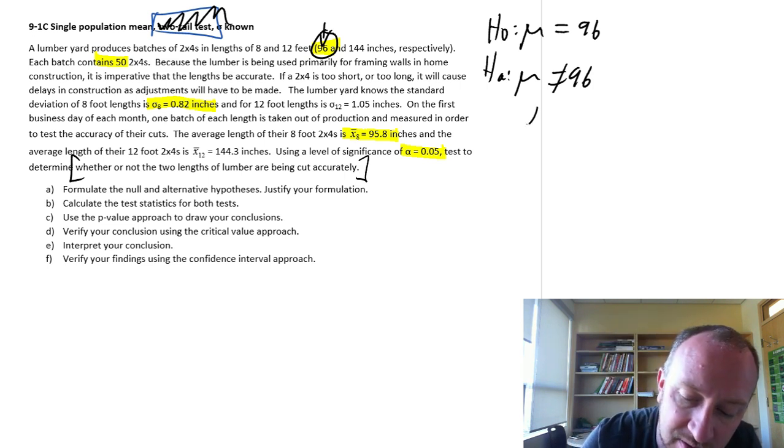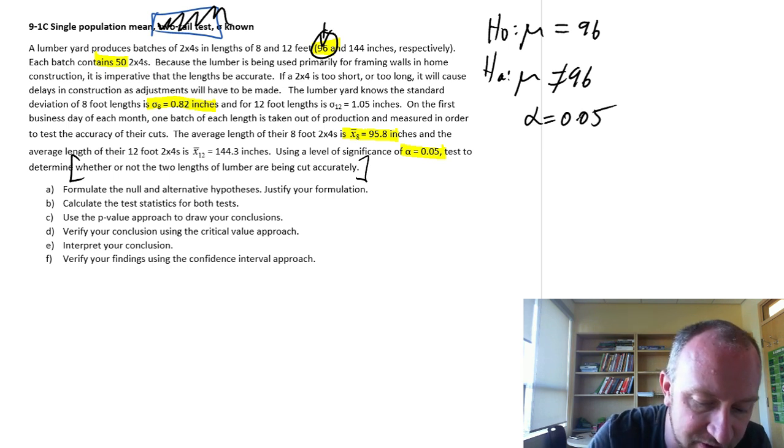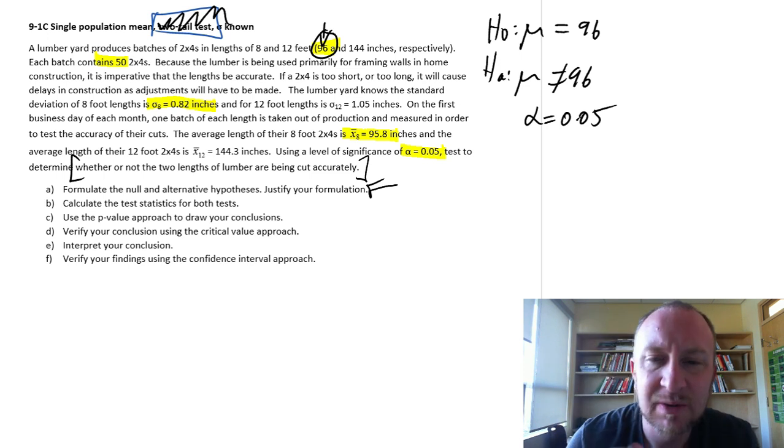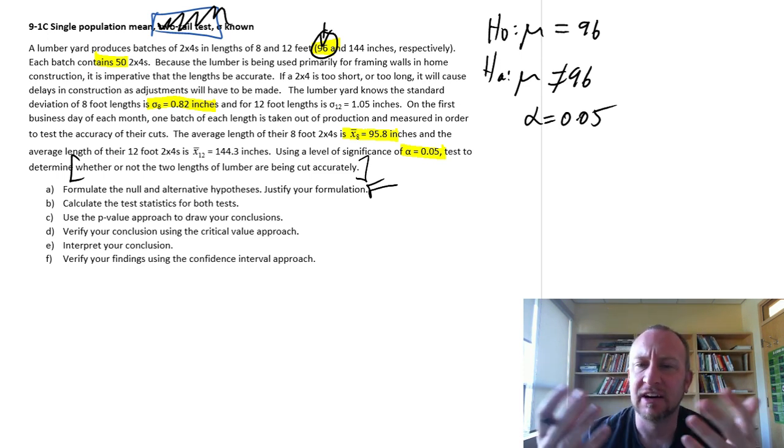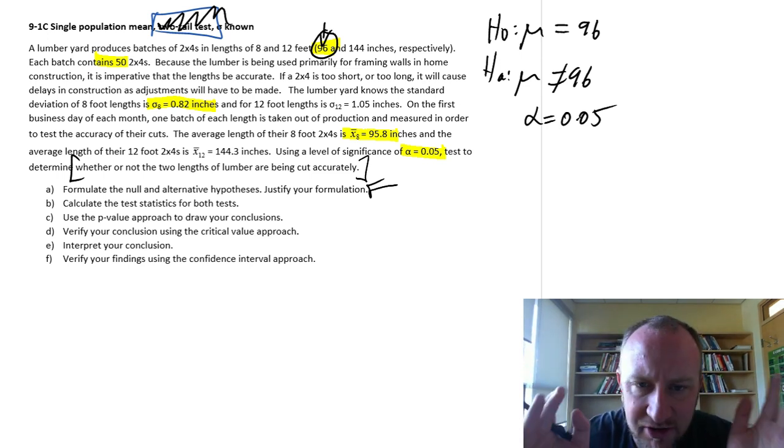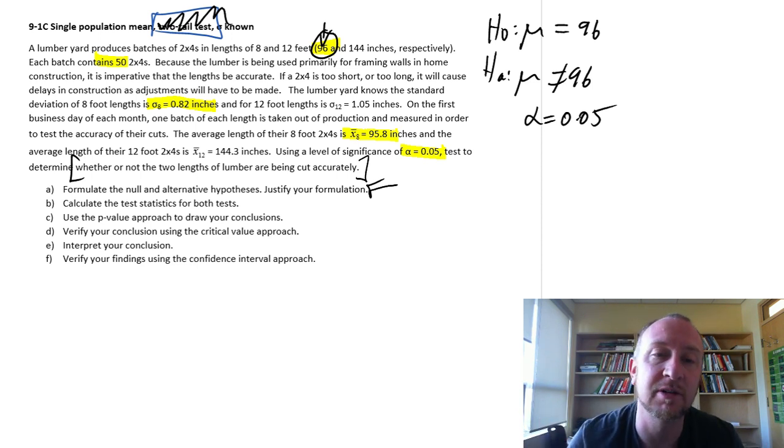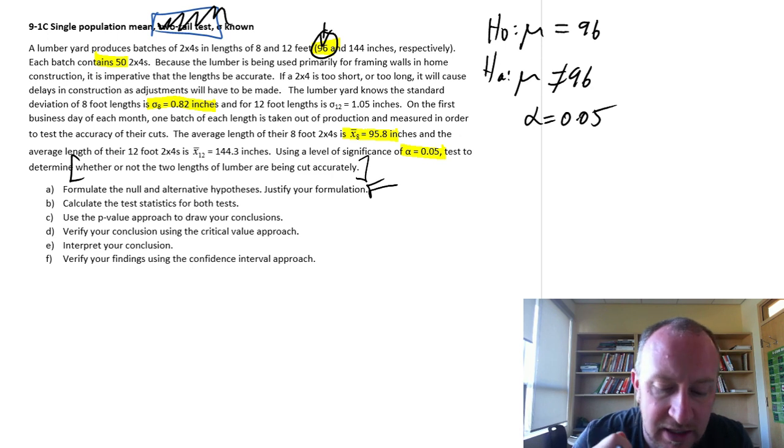Now, moving on, we have our level of significance is 0.05. So here we have our null and alternative formulated. We've justified that. If our evidence supports the null, then we know we're on target, everything's accurate. If our evidence supports the alternative hypotheses, then there's a problem. There's an issue with the accuracy and we'll have to stop production and take corrective measures.